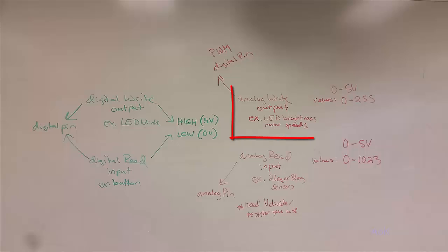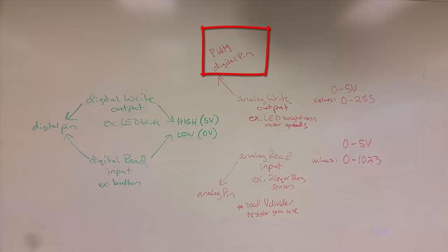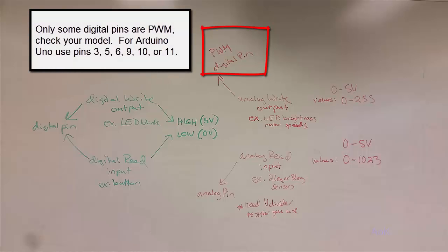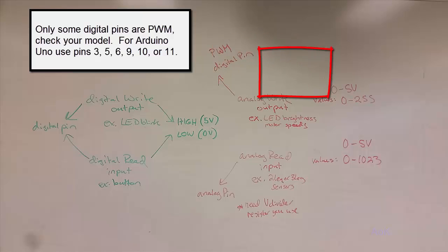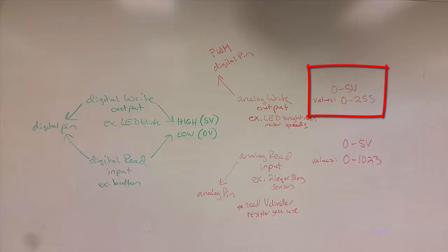Finally, we have an example of analog write. With analog write, you're still hooking up to a digital pin. However, you have to use a PWM pin. These pins can modulate how much voltage they use, so instead of using only 0 or 5 volts, it can have a range between 0 to 5 volts. The value that you actually type in will be from 0 to 255. 255 is synonymous with 5 volts, and 0 is synonymous with 0 volts. Any other number between 0 and 255 will give you a value somewhere between 0 and 5 volts, and it's proportional.